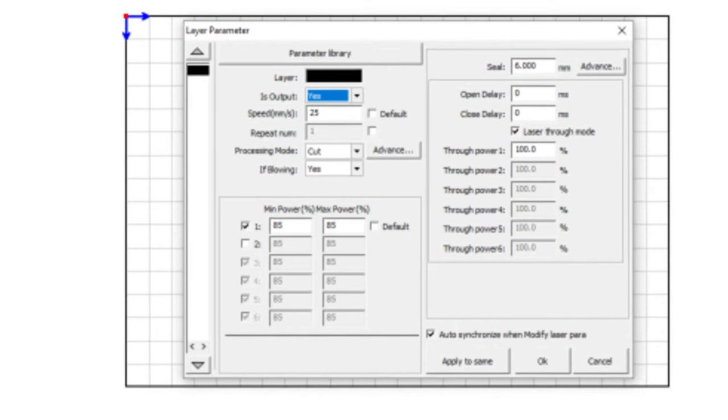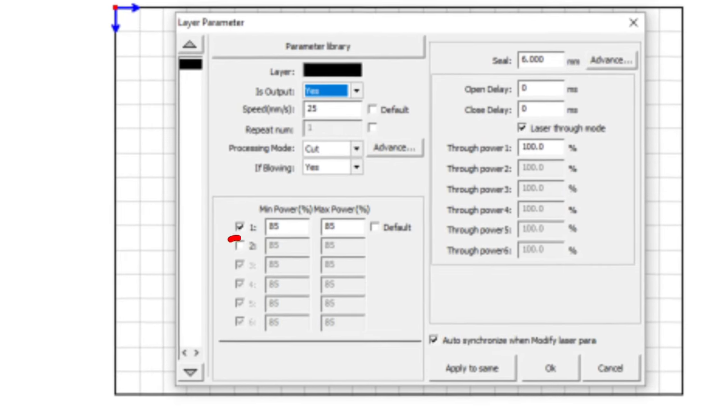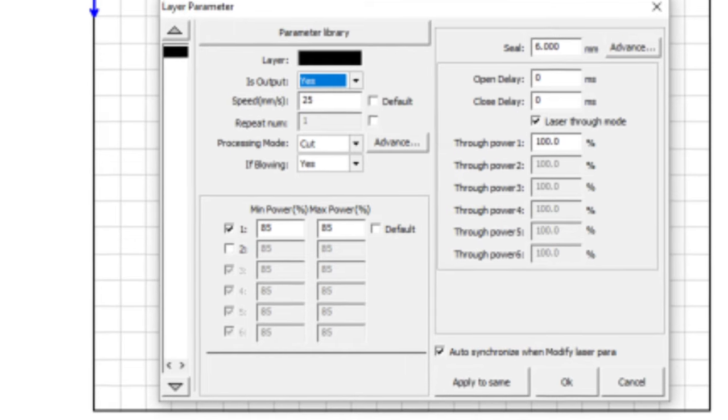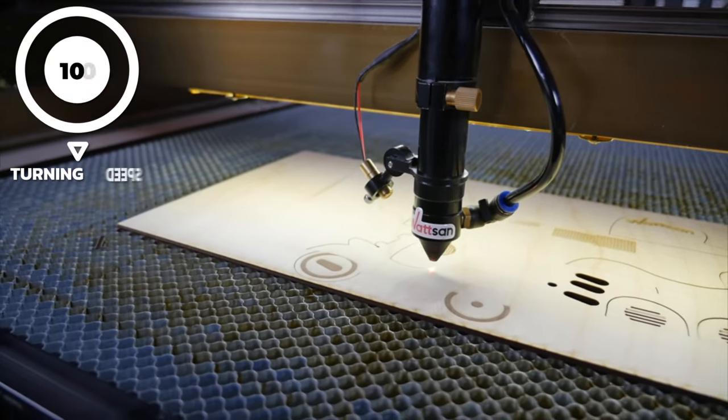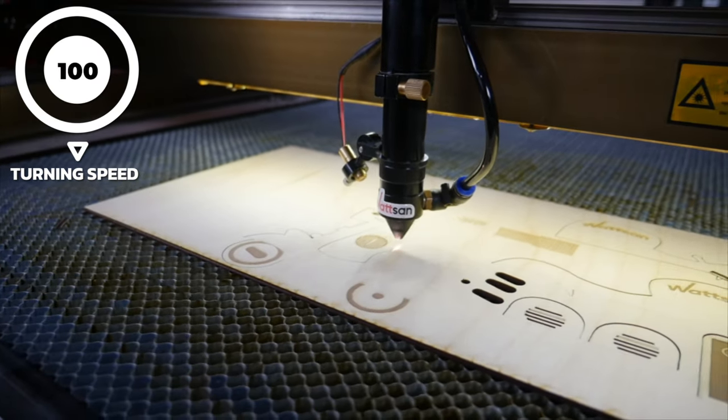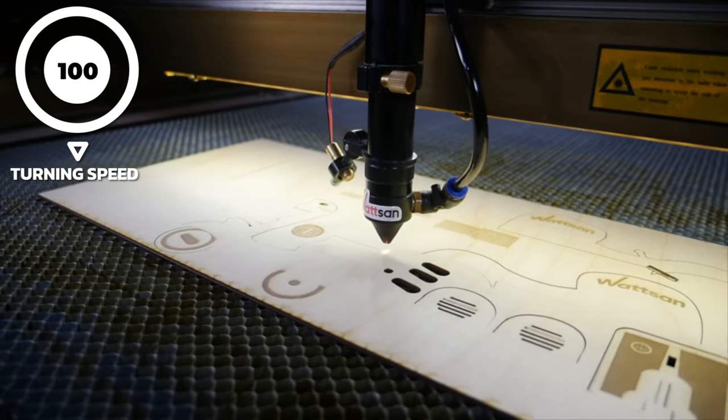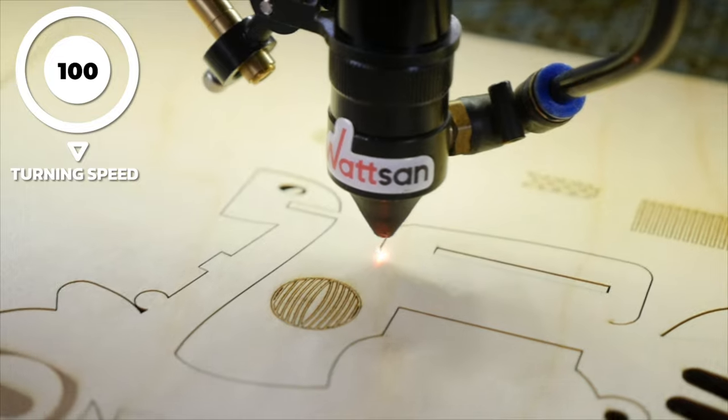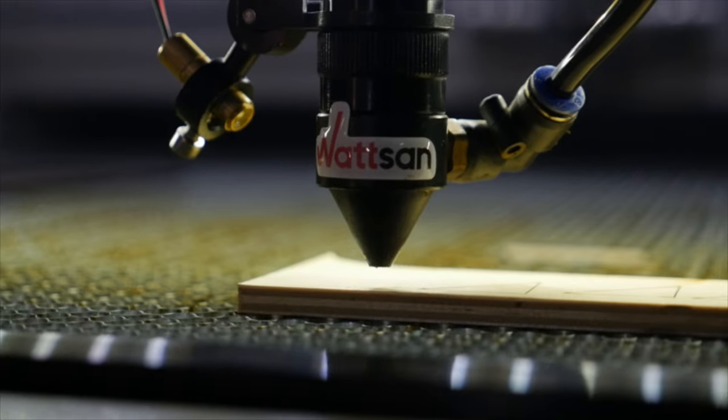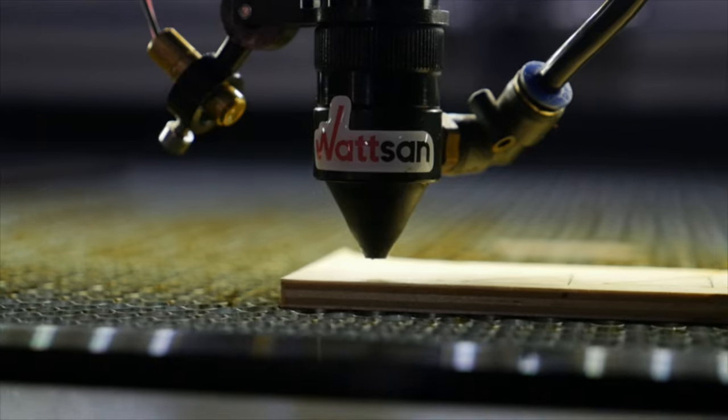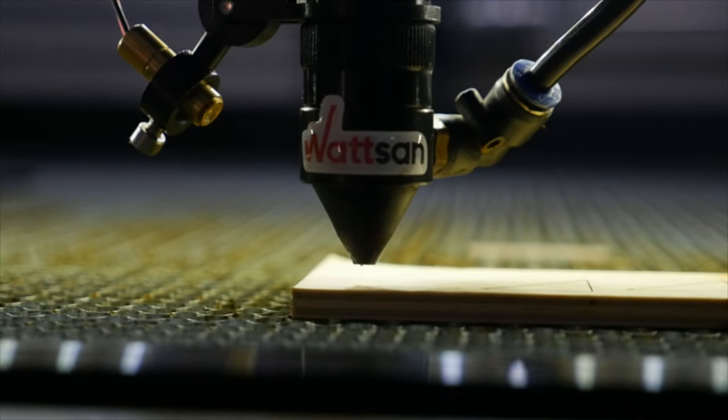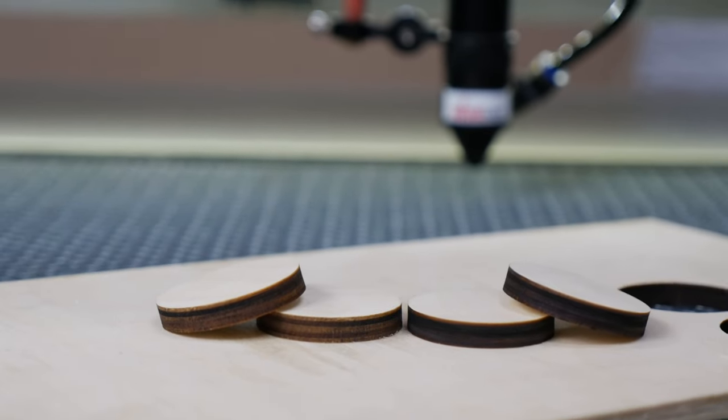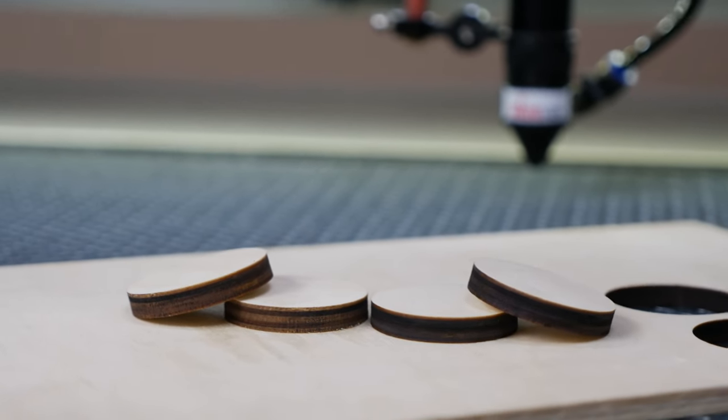CO2 laser operators often neglect the so-called angular or minimum power. When a particular cutting speed is set, the machine moves at a changing speed and has both accelerations and decelerations at corners and turns. If the power is constant, the laser will burn the material at the points where the movement changes. To prevent this from happening, it is necessary to set the minimum or so-called angular power, which will change in proportion to the speed.